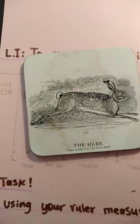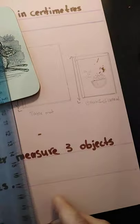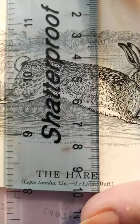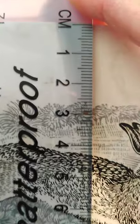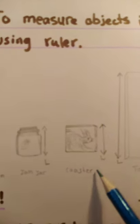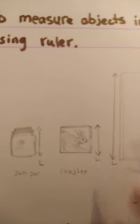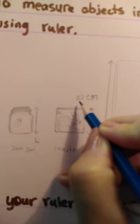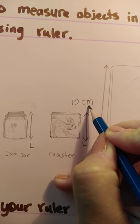We have the coaster now to measure it. It is, as you can see, 10 centimeters — 1, 2, 3, 4, 5, 6, 7, 8, 9, 10 centimeters. The length of the coaster — I've drawn it, and the measurement, the length of the coaster, is 10 centimeters. You write the number — that is your measurement.